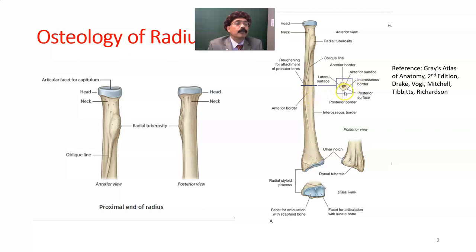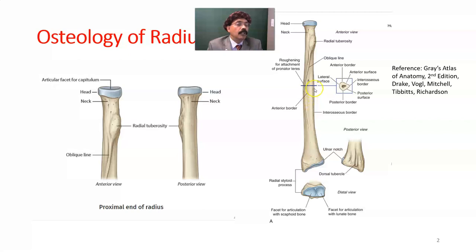The posterior surface lies between the interosseous border and the posterior border. The lateral surface lies between the anterior border and the posterior border. So we have three borders and three surfaces. Among the borders, the interosseous border — also called the medial border — is the most distinct.